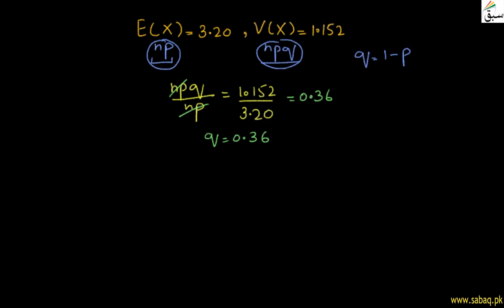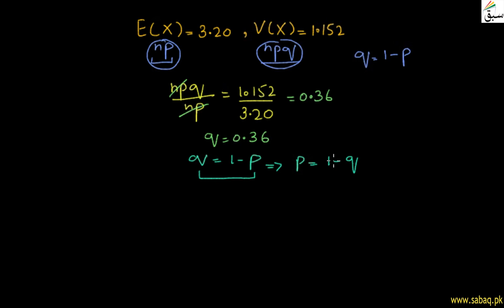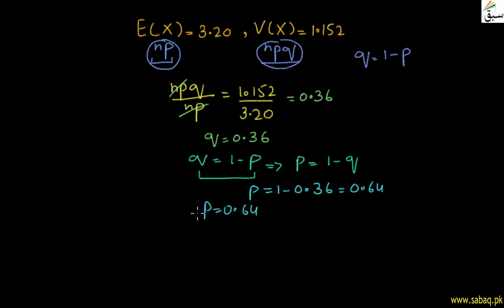We know that q equals 1 minus p, so p equals 1 minus q. Substituting, p equals 1 minus 0.36, which gives p equal to 0.64.